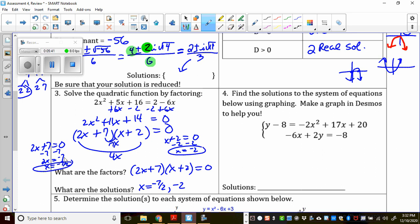So number 4. Find the solutions to the systems of equations below using graphing. Make a graph in Desmos to help you. So you can literally type in these graphs, these equations in Desmos like they are now. You don't really have to solve for y, but I'm just going to solve for y because I want you to know how to do that. So I'd have to add 8 here. So my first equation is negative 2x squared plus 17x plus 28. My second equation, I'm going to have to move that negative 6x to the other side. So I'd get 2y equals 6x minus 8 and divide everything by 2. So that ends up with 3x minus 4.